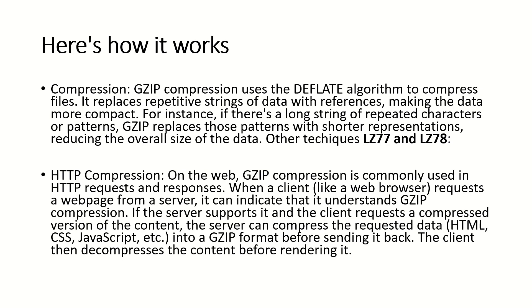GZIP compression uses the deflate algorithm to compress files. The deflate algorithm replaces repetitive strings of data with references, making the data more compact. For instance, if there is a long string of repetitive characters or patterns, GZIP replaces those patterns with shorter representations, reducing the overall size of the data.